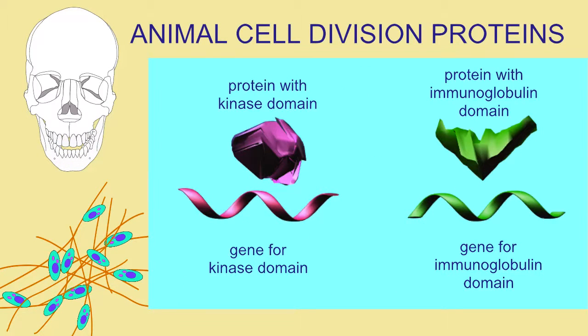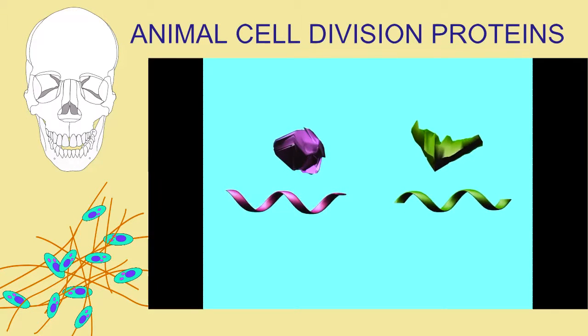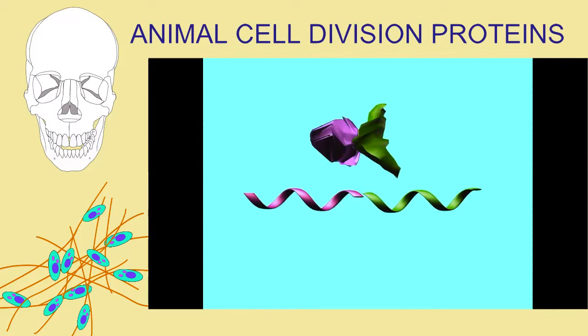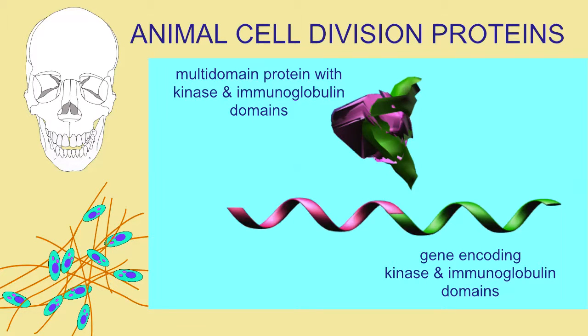Proteins can have different blocks known as domains, which serve different functions. Domains can be shuffled from protein to protein, and so you can combine two domains from different sources and get a novel protein.